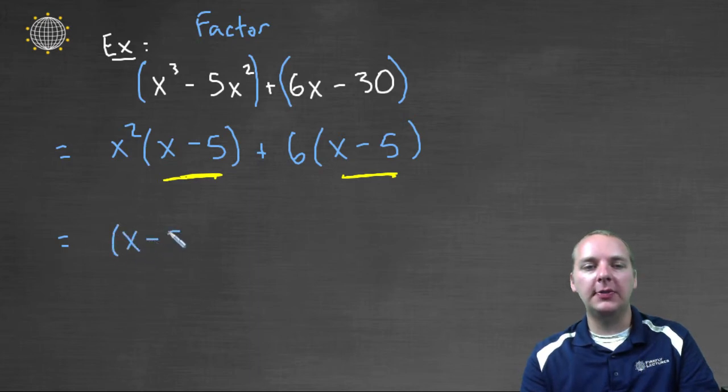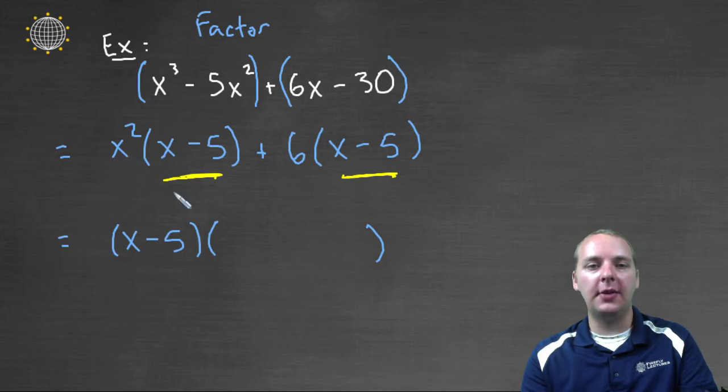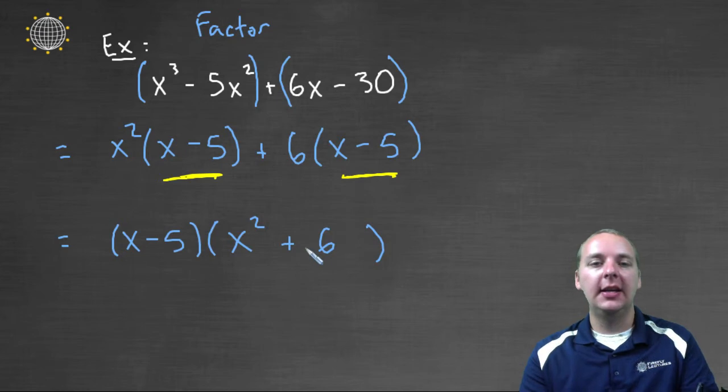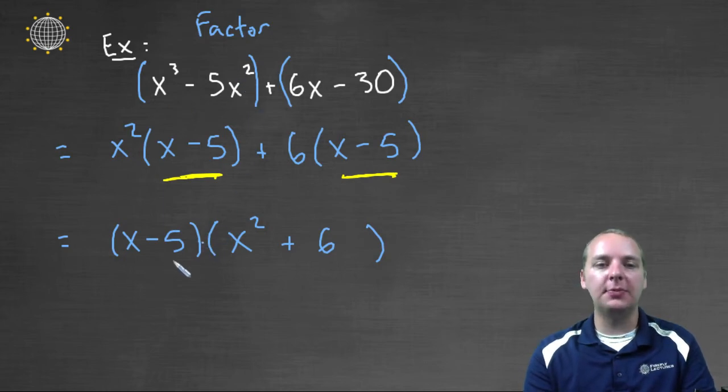So if we pull out that common factor from these two terms here, we'd pull out an x minus 5. And then left over from the first group, we'd have an x squared. And from the second group, we'd have a plus 6. And so now the entire polynomial, this original polynomial in white, without the parentheses, factors as x minus 5 times x squared plus 6.